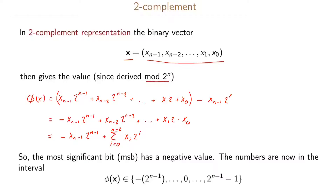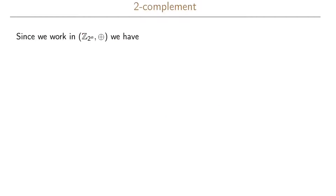So the most significant bit, which we denote MSB, now has a negative value in the representation of our number. The numbers we can now represent are in the interval from minus 2^{n-1} up to 2^{n-1} minus 1. Since we are working in the group with elements in Z_{2^n} with addition modulo 2^n as our only operation, we can write that negative x is congruent to 2^n minus x.